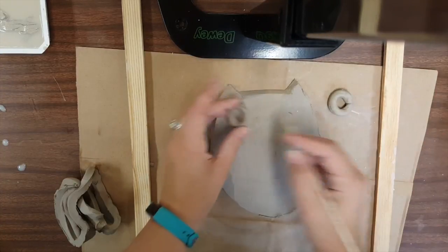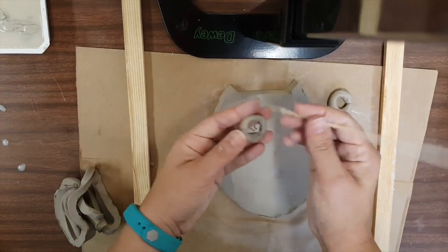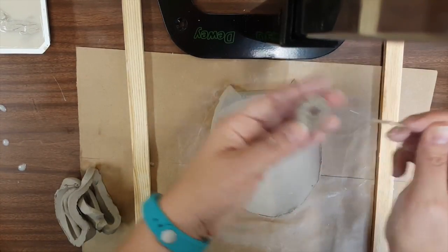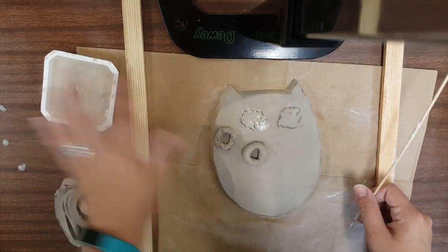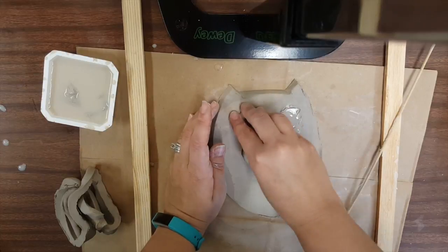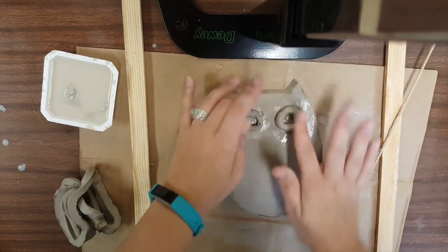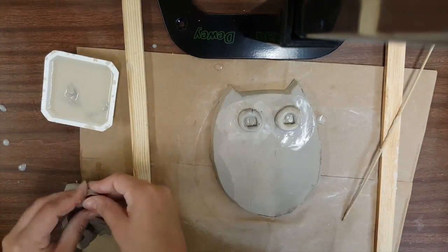So scoring is roughing up or scratching into the clay. You want to do it on both areas that are being attached - so the bottom of my eyes and on the owl itself. At your table you'll have some water, some wet clay, and then smooth things out so that they're going to stay on and they won't fall off later in the process.